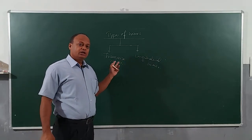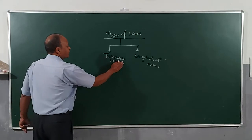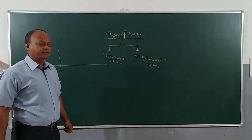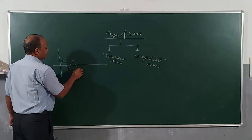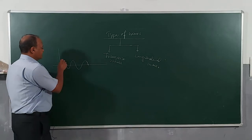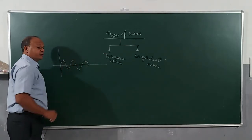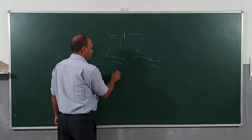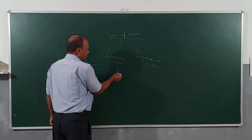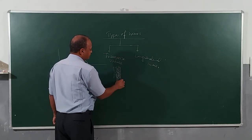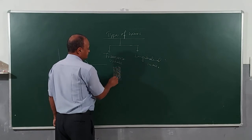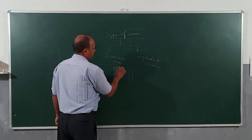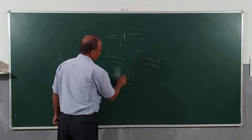Transverse waves are produced when particles of the medium oscillate in a direction perpendicular to the propagation of the wave, meaning this wave is going to travel in the form of crests and troughs. On the other hand, a longitudinal wave travels in the form of compressions and rarefactions.